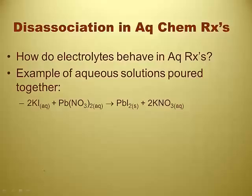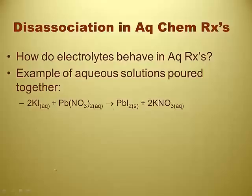This is a before-and-after situation. Those reactants are before — they're in separate beakers. The potassium iodide is in a beaker, the lead nitrate is in a beaker. You pour them together into the same beaker and you get a precipitate afterward. You get lead iodide and potassium nitrate. Everything follows the solubility rules. This is just our typical double replacement reaction — balanced and with states of matter.